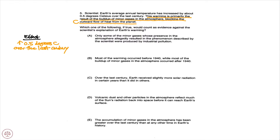And what is the scientist's proposed explanation for this observed effect of the Earth's warming? It is the buildup of minor gases — his proposed cause is this buildup of minor gases that are blocking the outward flow of heat from the planet.